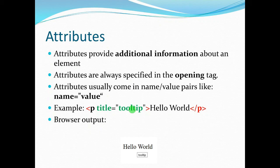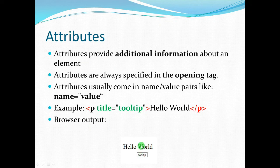Here is a simple example of a paragraph tag that has a tooltip. As you can see, there is 'title', an equal sign, and then double quotes with the value. We can see the output in the browser — 'Hello World' — and when you hover your mouse over it, a tooltip appears. Essentially, whatever we write in the value is what is displayed when we hover our mouse over the text.